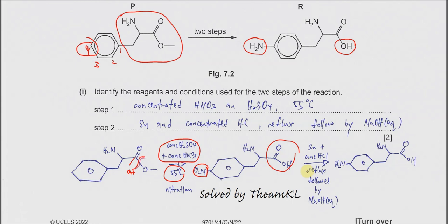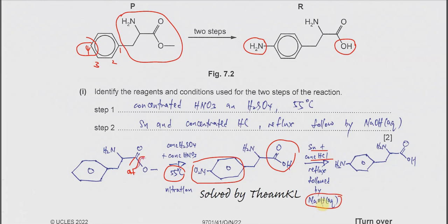Step 2 is reduction of the nitro group. Using tin with concentrated HCl, refluxed, then followed by sodium hydroxide — you need NaOH at the end to ensure the amine forms. The nitro group is reduced: two oxygens are removed and two hydrogens are added. So the nitro group converts to an amine (phenylamine group), giving compound R. These are the two steps: nitration then reduction.